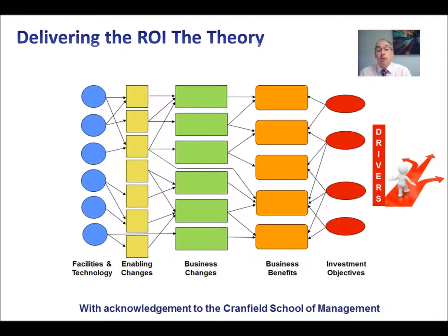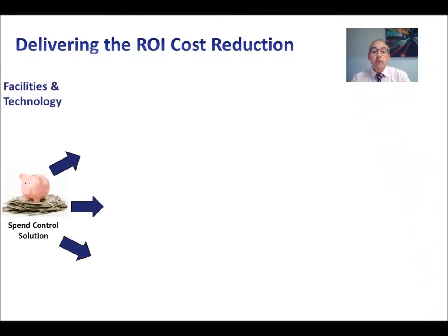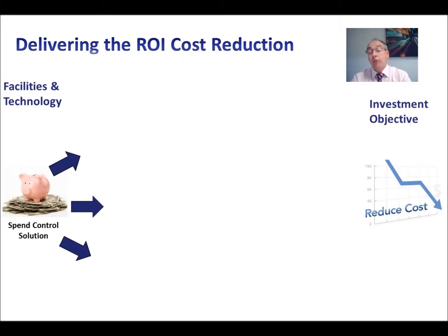Our investment objective in this case is to reduce cost. So on the left hand side we have facilities and technology, we have enabling changes through the features that we deliver, these then lead to business changes in the way that we work, and that links to business benefits which deliver our investment objectives. Let's have a look at our spend control solution and how we can show the link through to our investment objective, which is cost reduction.